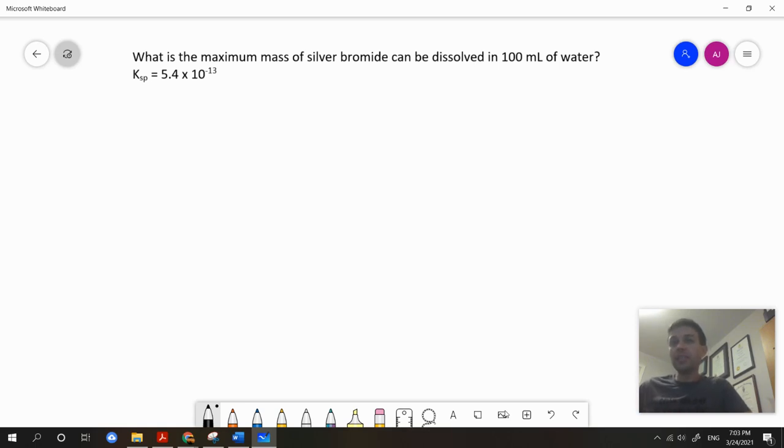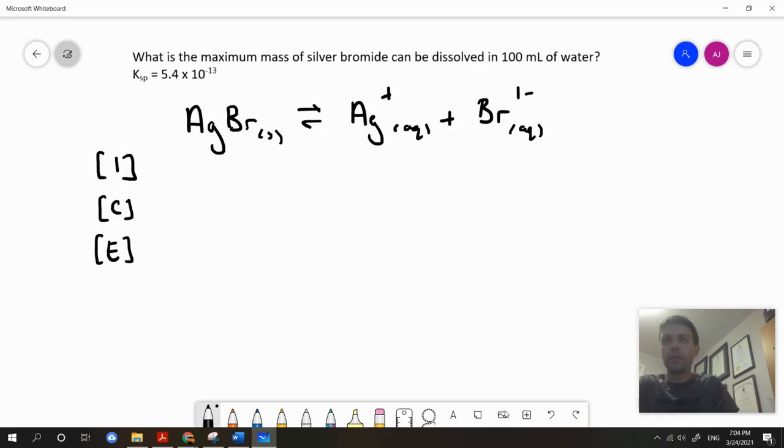Once again, let's start off by writing out a balanced chemical equation and then creating an ICE chart below it. Recall that when we're trying to solve for solubility, we're going to let x be the amount of the solute which can be dissolved in one liter of water, or the molar solubility.